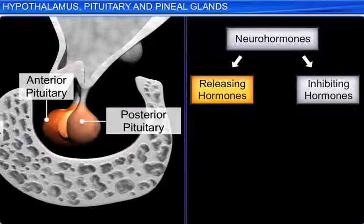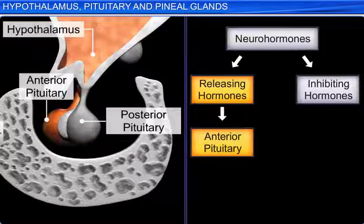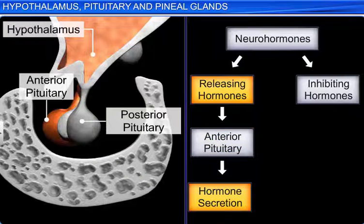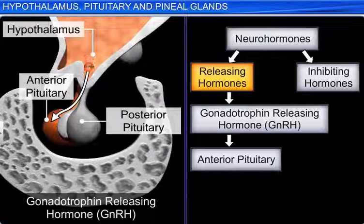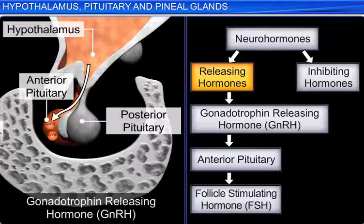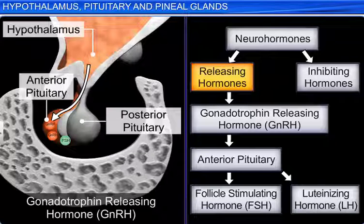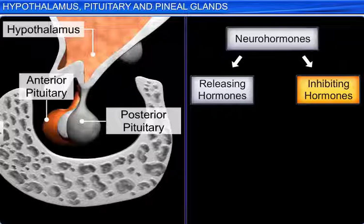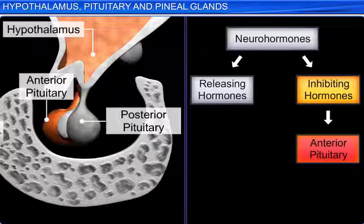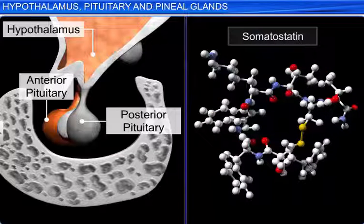The releasing hormones of the hypothalamus stimulate the anterior pituitary to secrete its hormones. For example, gonadotrophin releasing hormone stimulates the release of follicle stimulating hormone (FSH) and luteinizing hormone (LH) from the pituitary. On the other hand, the inhibiting hormones stop the anterior pituitary from secreting hormones. For example, somatostatin inhibits the release of growth hormone from the pituitary.